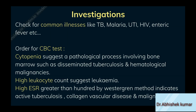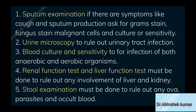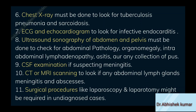Now moving on to investigations. Firstly, check for common illnesses like TB, malaria, UTI, HIV, enteric fever, etc. Secondly, order a CBC test: cytopenia suggests a pathological process involving bone marrow such as disseminated tuberculosis and hematological malignancies. High leukocyte count suggests leukemia. High ESR greater than 100 by Westergran method indicates active tuberculosis, collagen vascular disease and malignancy. 1. Sputum examination — if there are symptoms like cough and sputum production, ask for gram stain, fungal stain, malignant cells and culture or sensitivity. 2. Urine microscopy to rule out urinary tract infection. 3. Blood culture and sensitivity for both anaerobic and aerobic organisms. 4. Renal function test and liver function test to rule out any involvement of liver and kidney. 5. Stool examination to rule out any ova, parasites and occult blood. 6. Chest X-ray to look for tuberculosis, pneumonia and sarcoidosis.